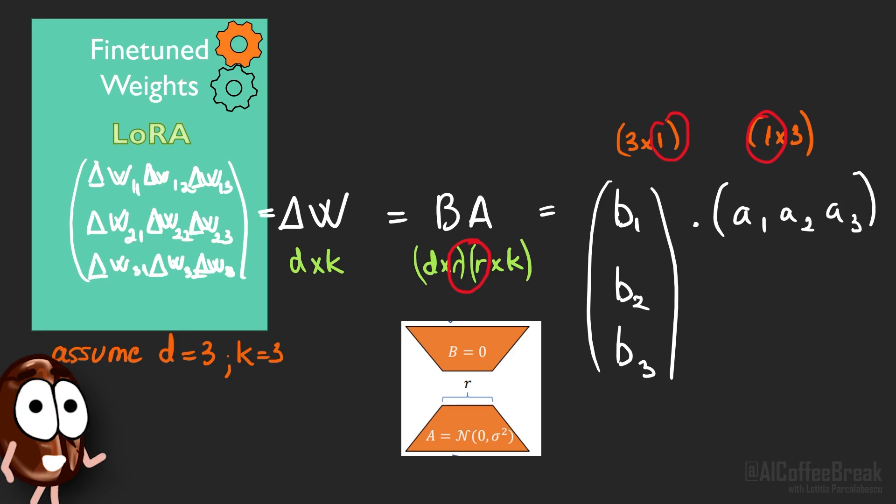If we choose the rank to low, we reduce the dimensionality to much and lose information because we implicitly deleted linearly independent columns. If we choose it to high, we keep too many parameters that are linearly dependent and waste computation. We initialize A from a Gaussian distribution and B with 0 and let backpropagation figure out what the right numbers in the matrices A and B are according to our fine-tuning objective.